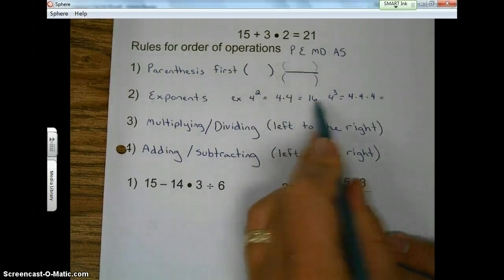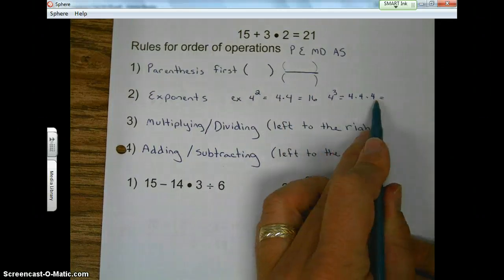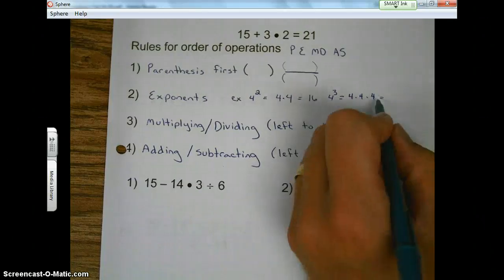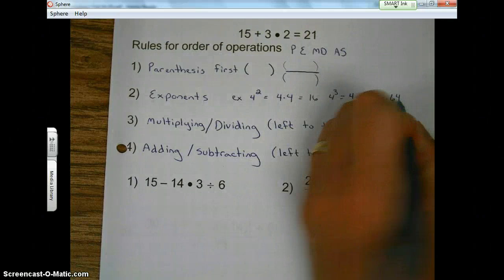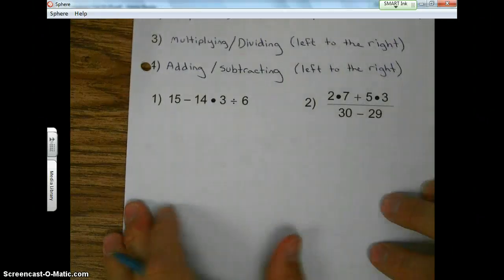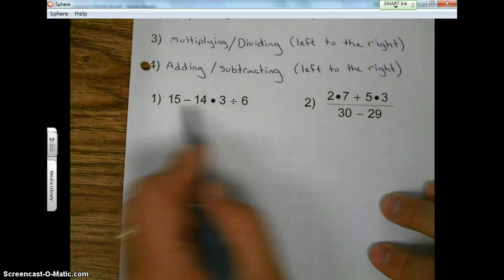So four times four is 16. 16 times four is 64. Okay, so let's take a look at number one.